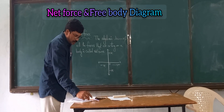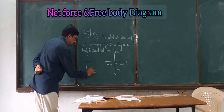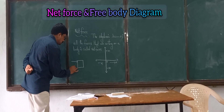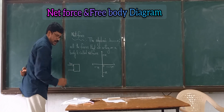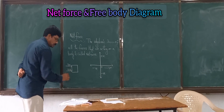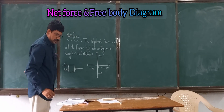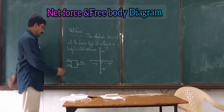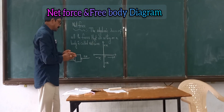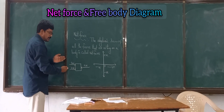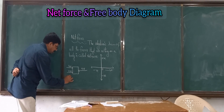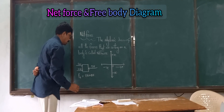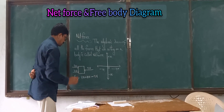Let us discuss an example from your textbook: calculate the net force acting on a body. Different forces are acting on the body. Those two forces are acting towards the positive x-axis, so you have to add those forces. Another force is acting towards the negative x-axis. So F-net equals the sum of the two forces acting towards the positive x-axis minus the force acting towards the negative x-axis.